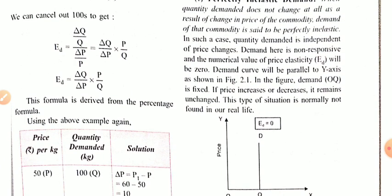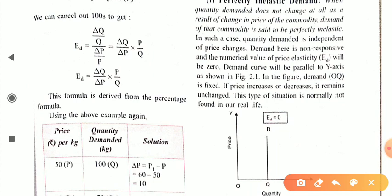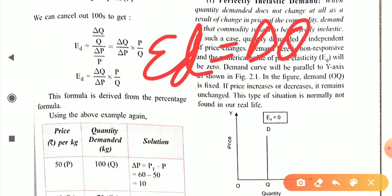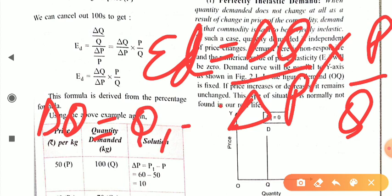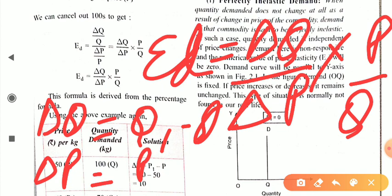This method is one of the simplest methods, with the formula E.D. = (delta Q / delta P) × (P / Q), where delta Q = Q1 − Q and delta P = P1 − P.